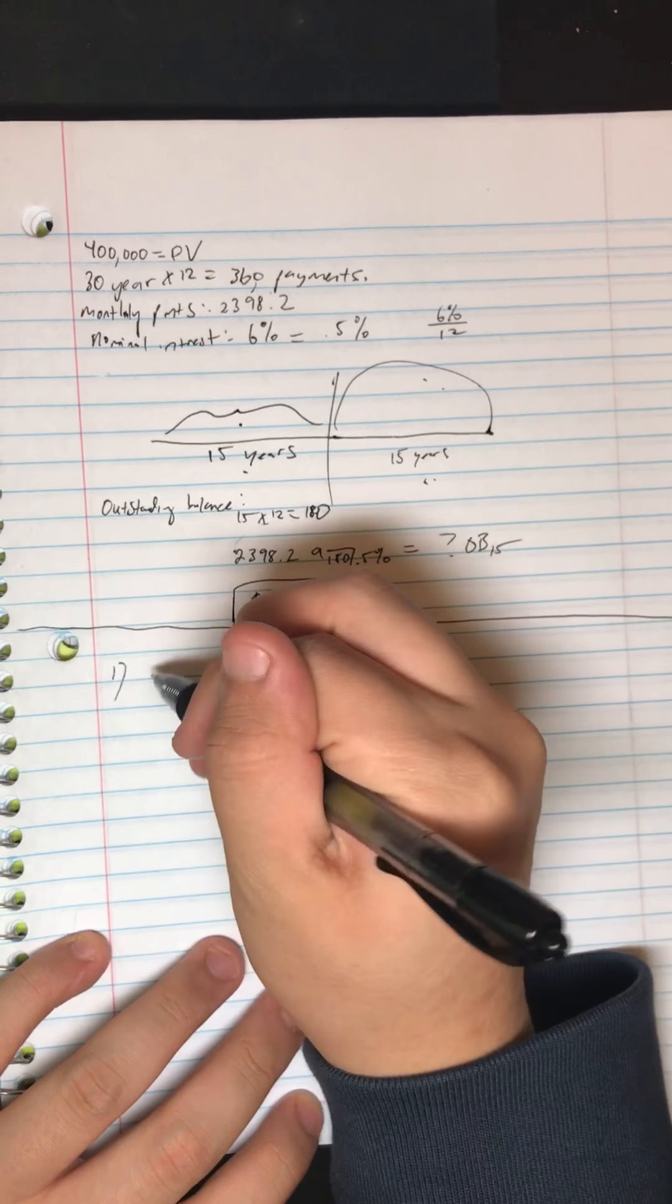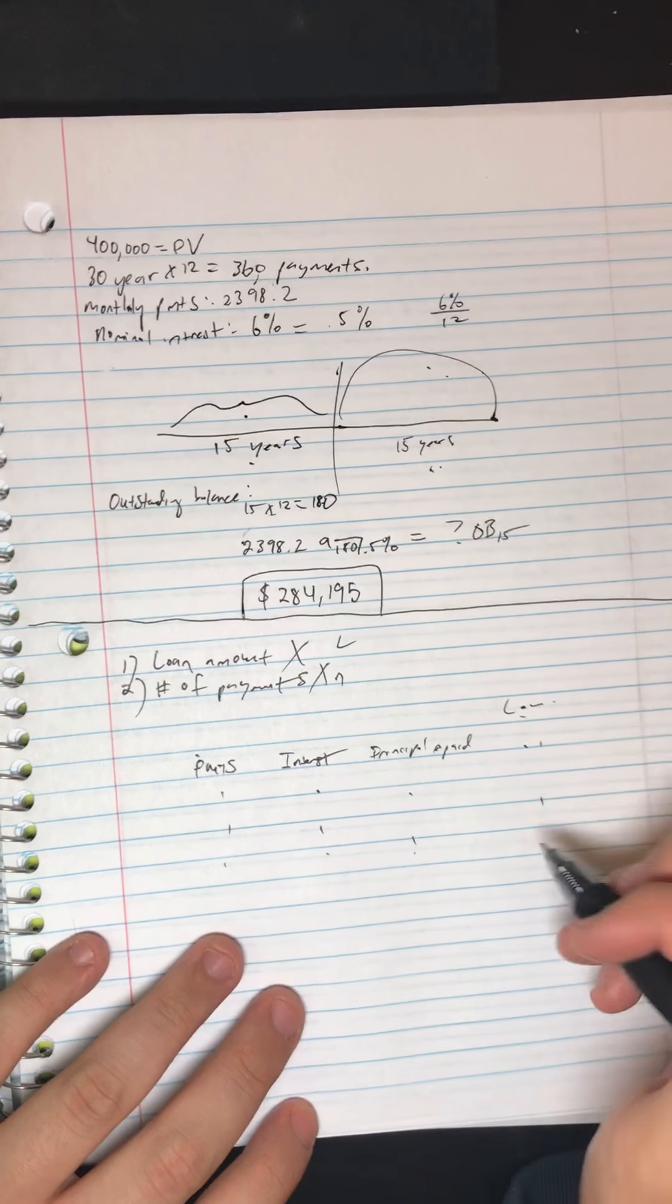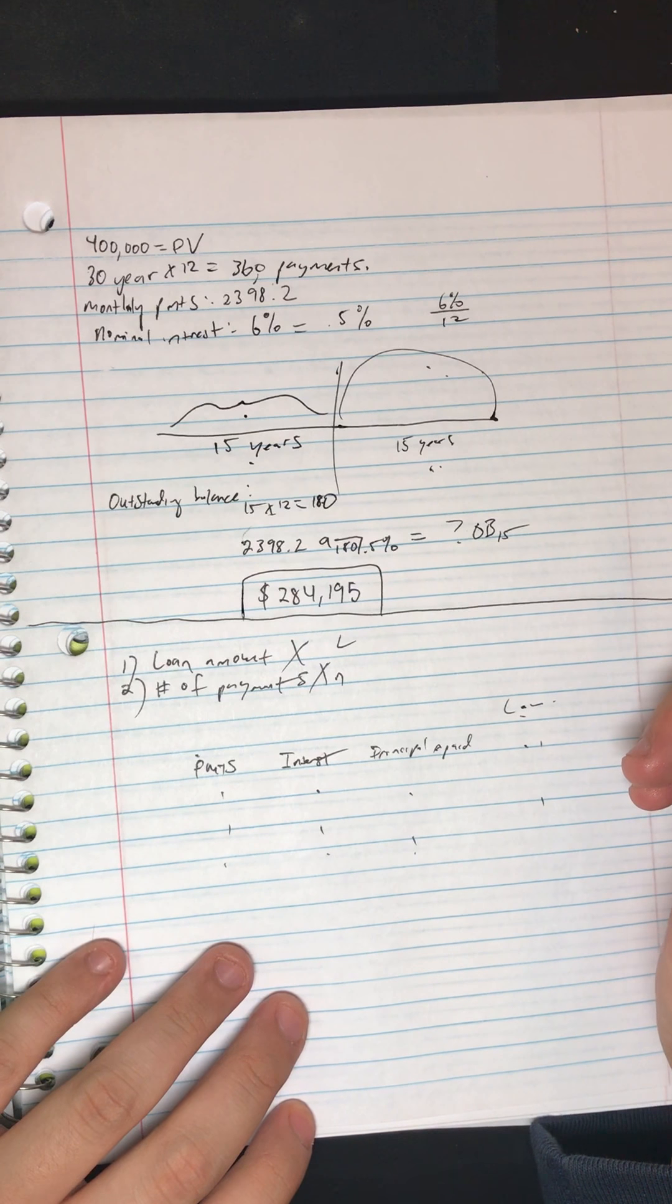But it's actually easy once you can really know how to solve for the amortization problems and really have a firm grasp on the amortization table. So the amortization table has payments, interest, principal repaid, and loan amount, and it just keeps going down.